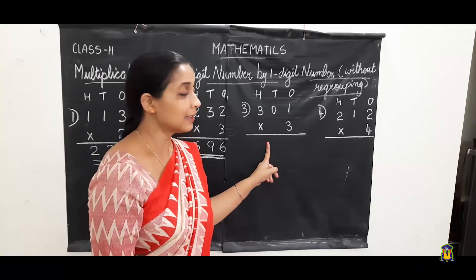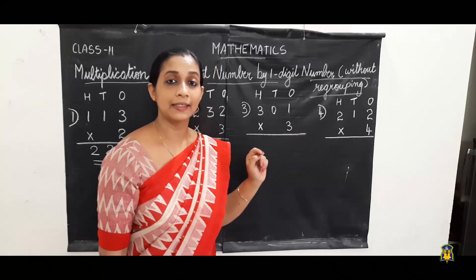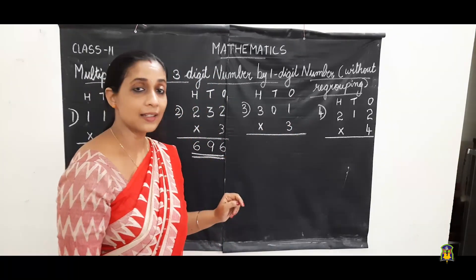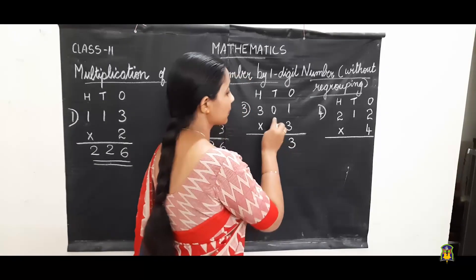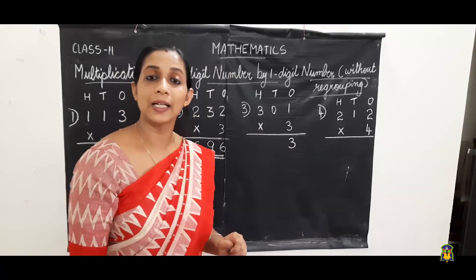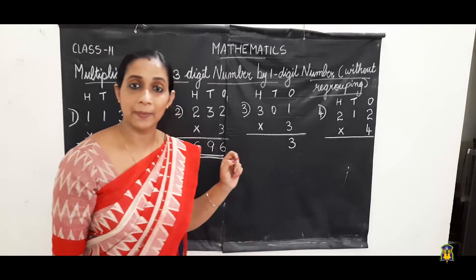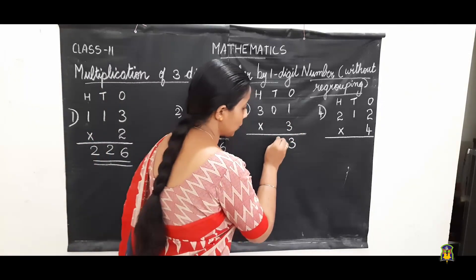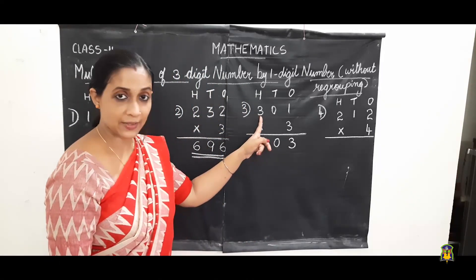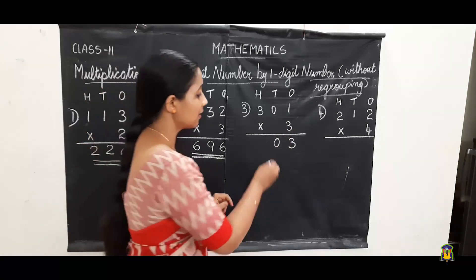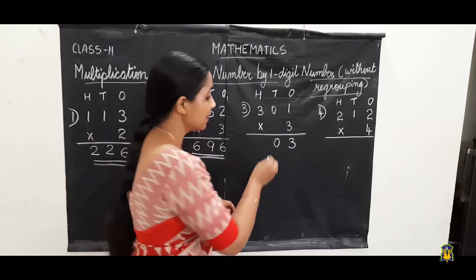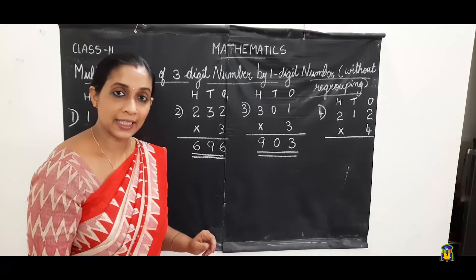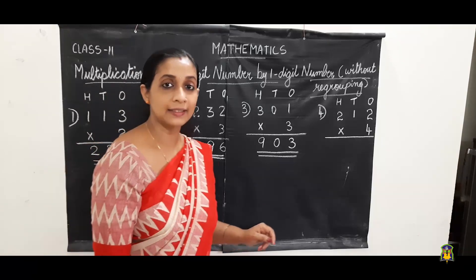Now the third question: three hundred one multiplied by three. Here also we should know the table of three. One's place: one threes are three. Tens place: zero multiplied by three — do you remember the multiplicative property of zero? Any number multiplied by zero, the product is zero. So zero multiplied by three is zero. Hundreds place: three multiplied by three — three threes are nine. So the product is nine hundred three.